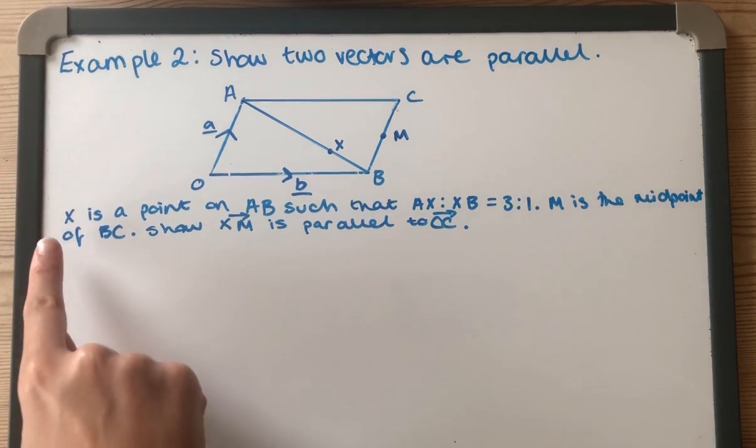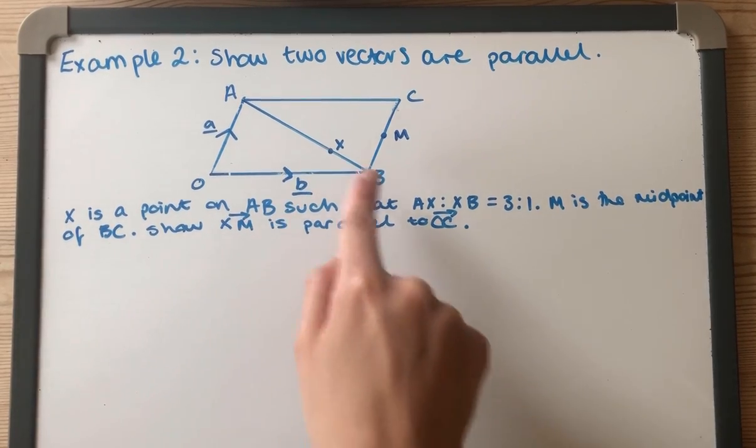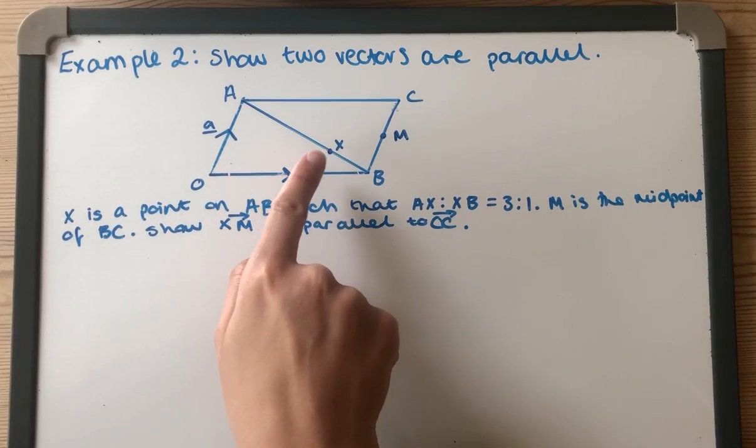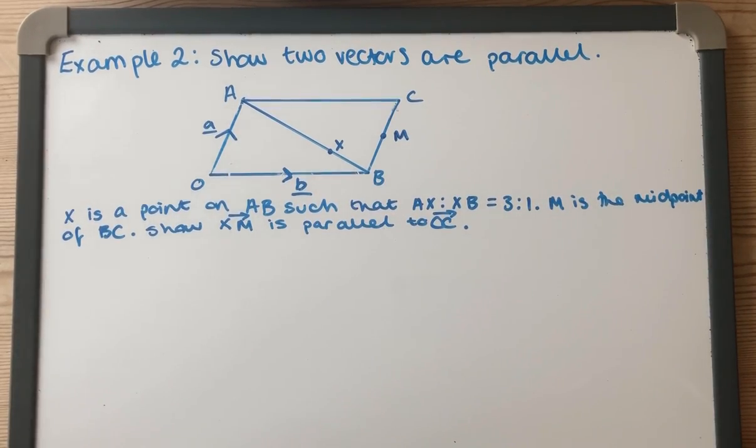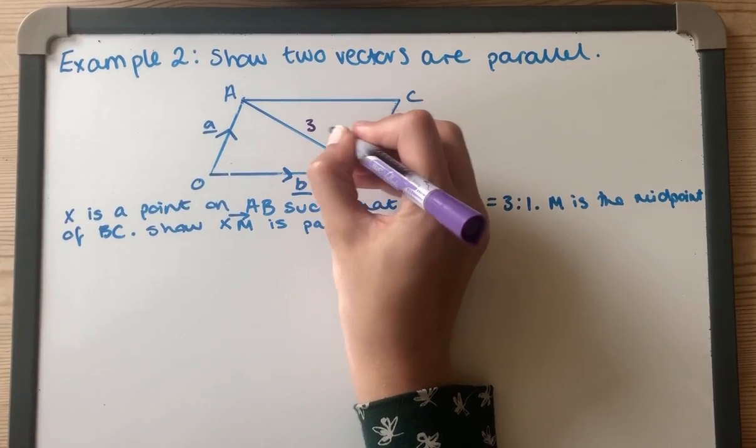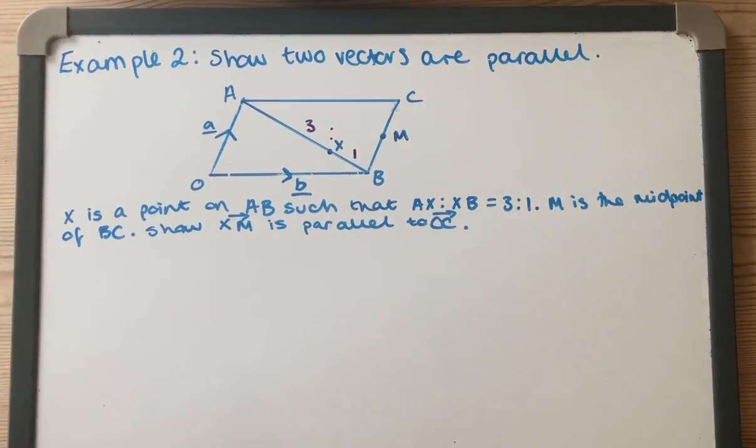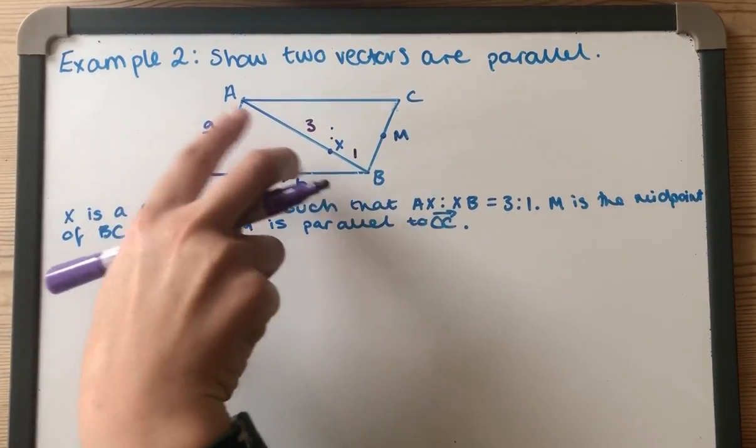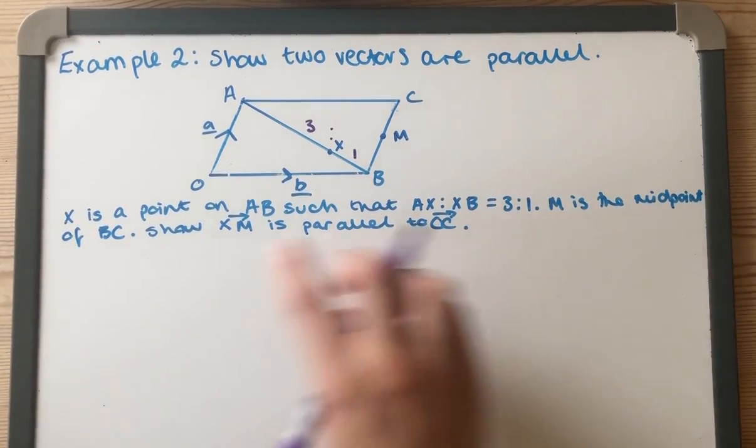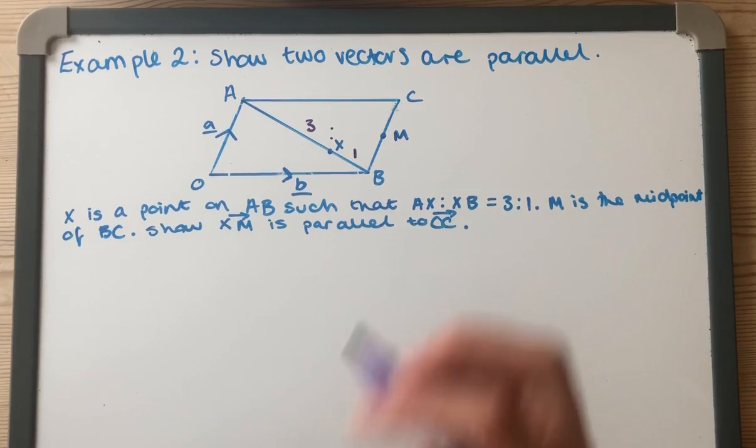Let me read the question out. X is a point on AB such that AX to XB is in the ratio 3 to 1. So I'm just going to write that on quickly - 3 to 1. That means that's one quarter of this and that's three quarters of this.